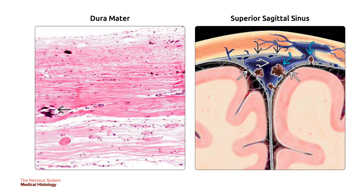On the left, the dura mater is composed of dense fibrous connective tissue; the outer and inner layers are often fused and difficult to distinguish. Non-specific calcifications can be seen, especially with increasing age. On the right, the superior sagittal sinus is a venous channel formed by the separation of the periosteal and meningeal dura layers. Arachnoid granulations in a curved blue arrow are projections of the arachnoid-covered, CSF-containing subarachnoid space into the blood-filled venous sinus.